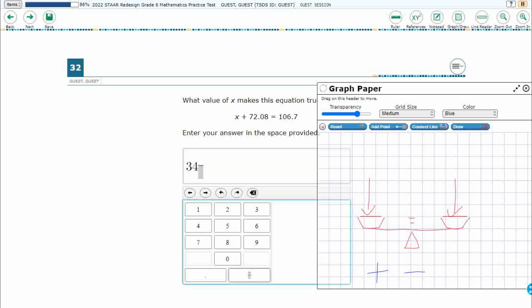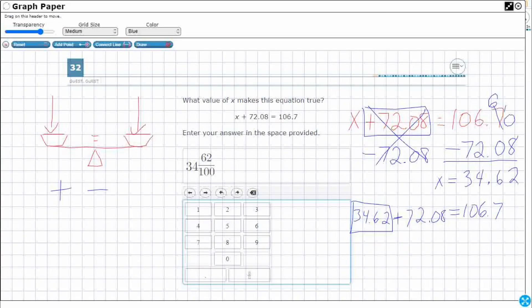And it automatically defaults to the numerator. So you hit 62. And then you have to actually select the denominator. And look at that. I've got 34 and 62/100. This also is the correct answer. So you can either do 34.62, or you can show it as a mixed number. And that's going to work.